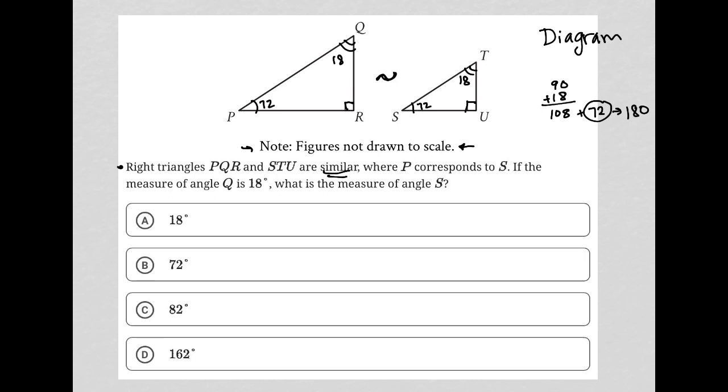The question says, if the measure of angle Q is 18, what is the measure of angle S? Well, we just found it. It's 72 degrees and therefore choice B is the correct answer.